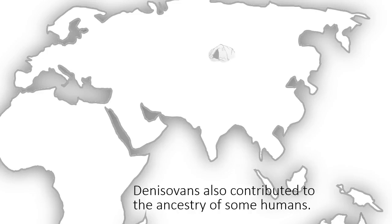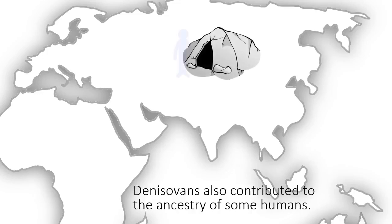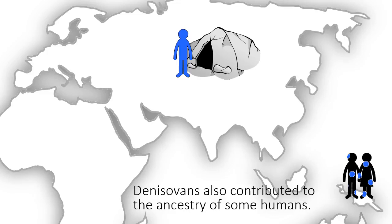A few years ago, another archaic population called the Denisovans was identified from sequencing DNA extracted from a bone found in a cave in Siberia. Comparison with the DNA sequence of modern humans showed that individuals in some parts of the world have some Denisovan ancestry. In particular, Papuans inherit around 4% of their DNA from Denisovan ancestors.